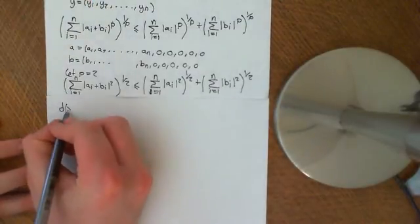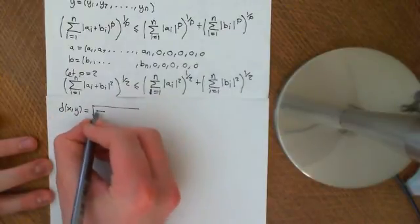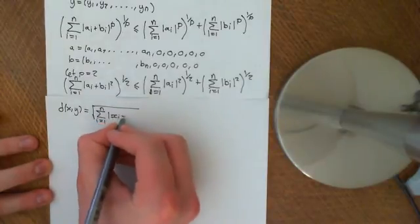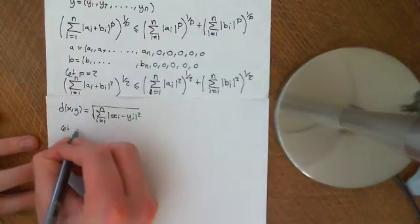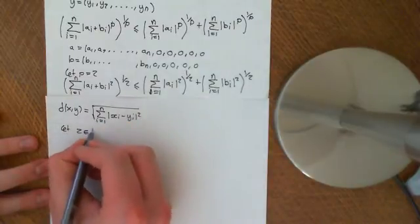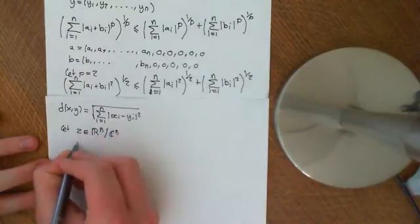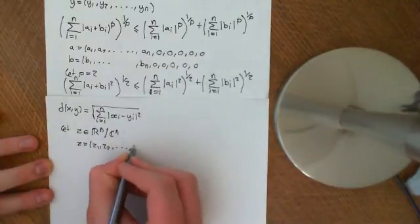So the distance between x and y is equal to the square root of the summation i equals 1 to n of the modulus of (xᵢ - yᵢ) squared. Now let z be another point in R^n/C^n, i.e., let's let it equal z = (z₁, z₂, all the way up to zₙ).